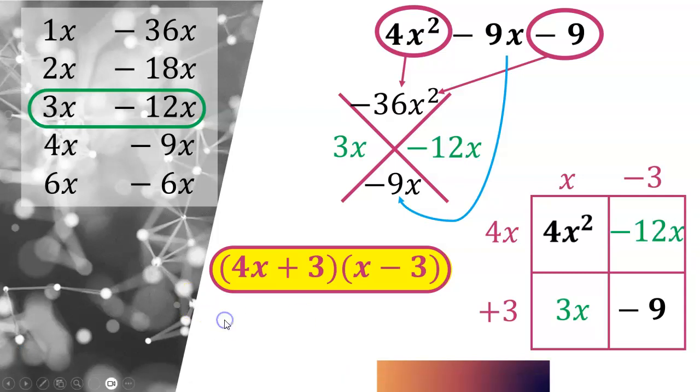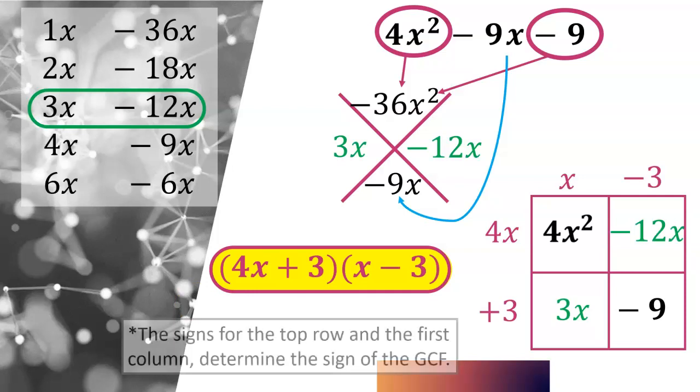So before we end here, I just want to remind you that the one thing to remember when using this method is you always want to look to see, before we start factoring things out, the sign of either the top row, so where the 4x² and -12x is, or the first column, the 4x² and the 3x. That's going to determine the sign of the greatest common factor.